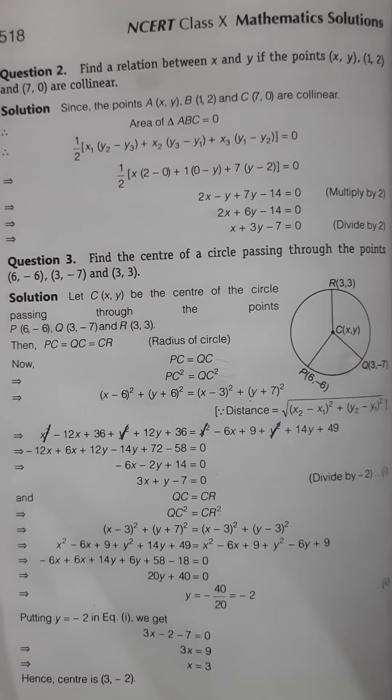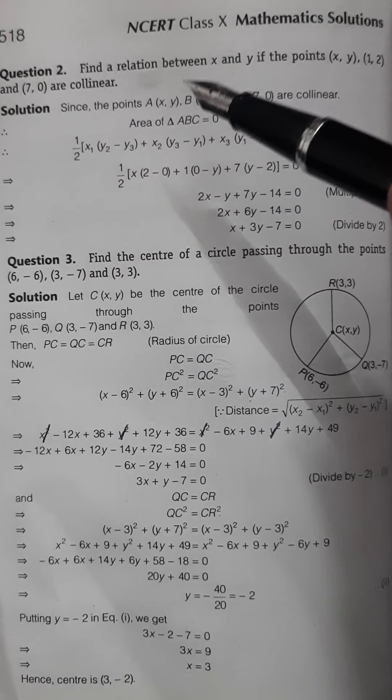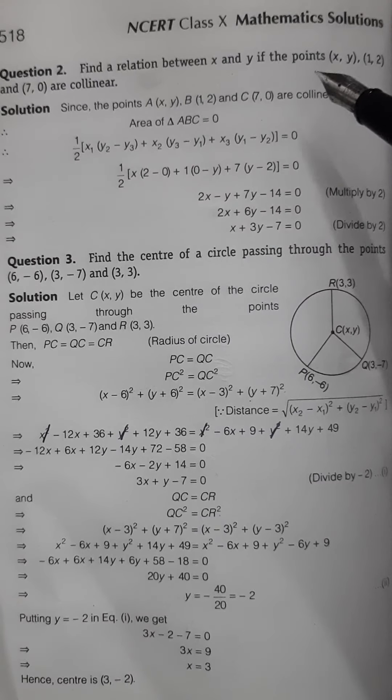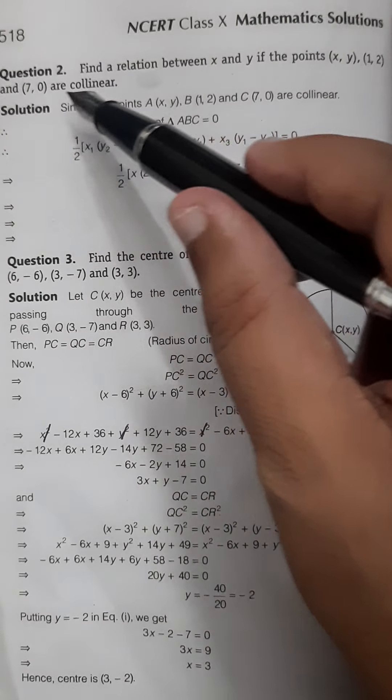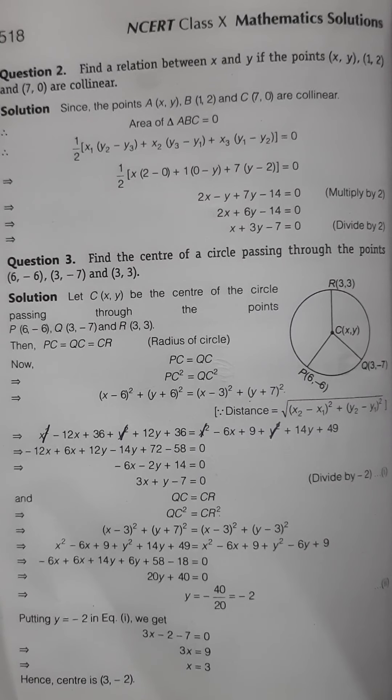So 7.4 question number 2 and question number 3. This is an easy question. Find a relation between x and y if the points (x, y), (1, 2), and (7, 0) are collinear. I already explained the meaning of collinear—collinear means when the points are on the same line.